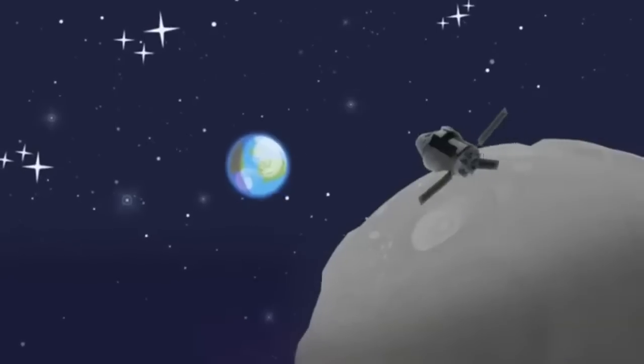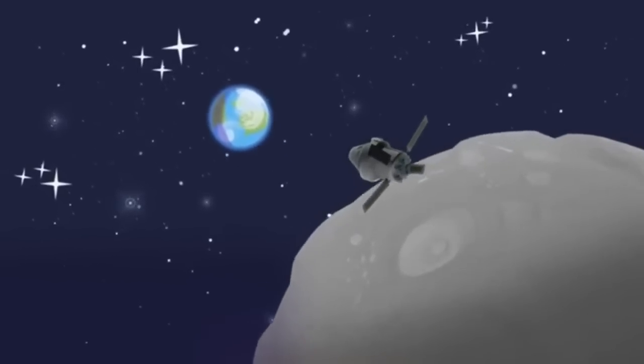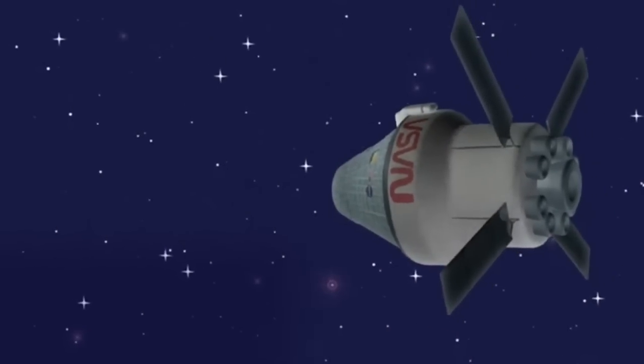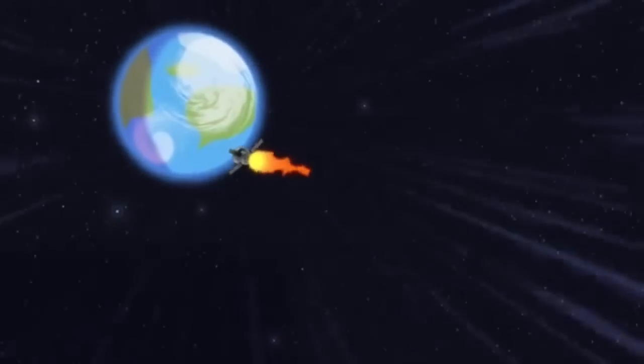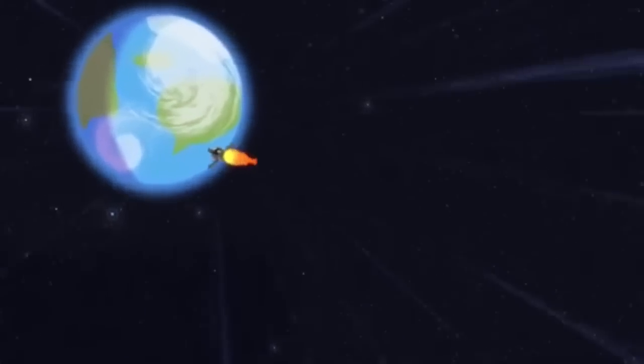Orion comes very close to the Moon again, passing about 60 miles above its surface. Then, the engines are fired for a second time, and the burn works with the pull of the Moon's gravity to shoot Orion back on a path toward home.